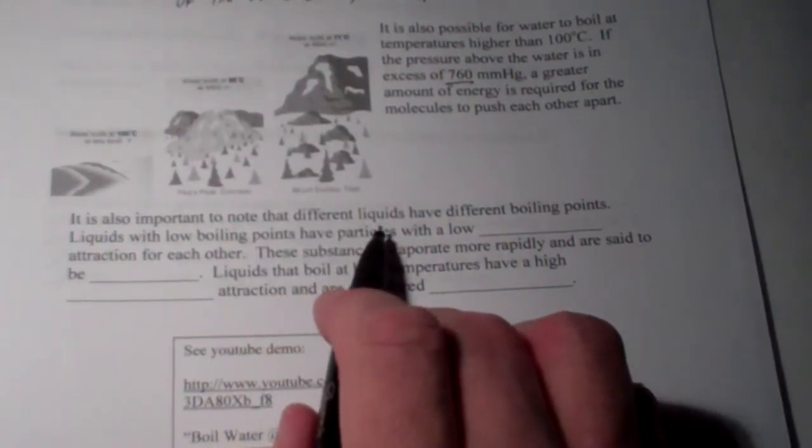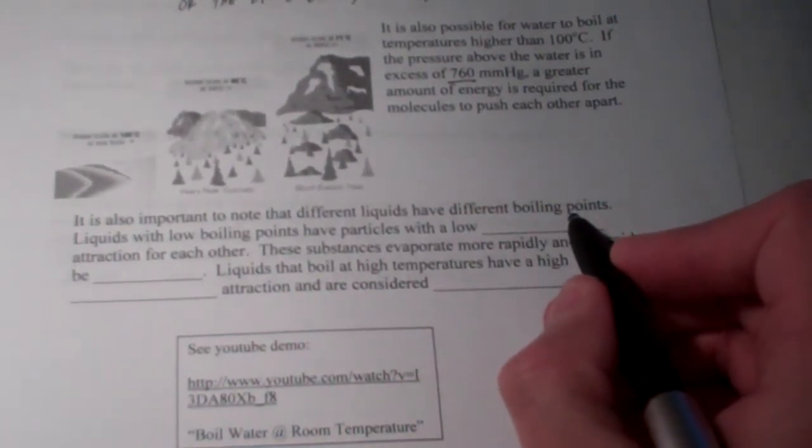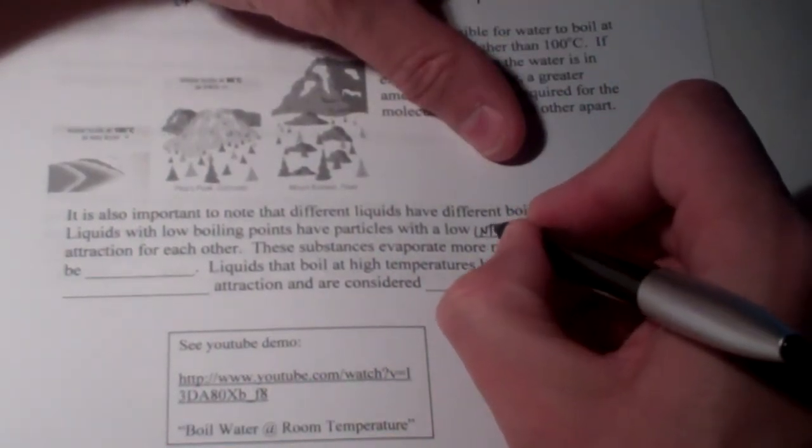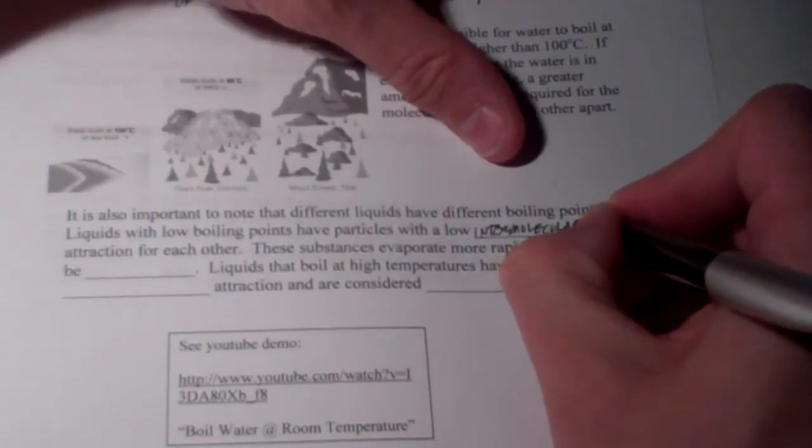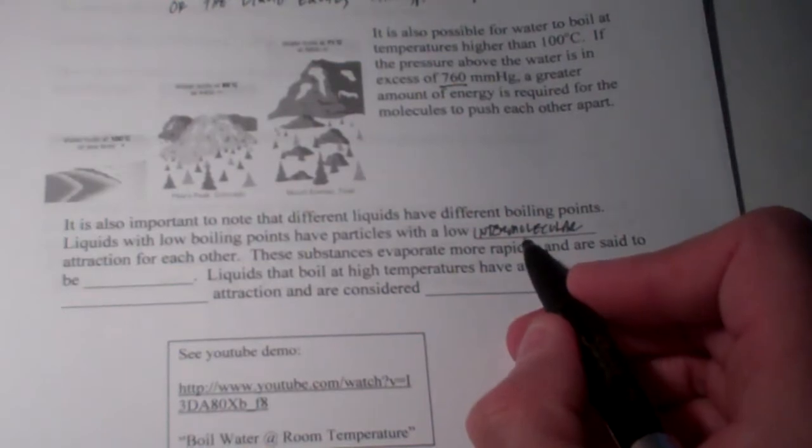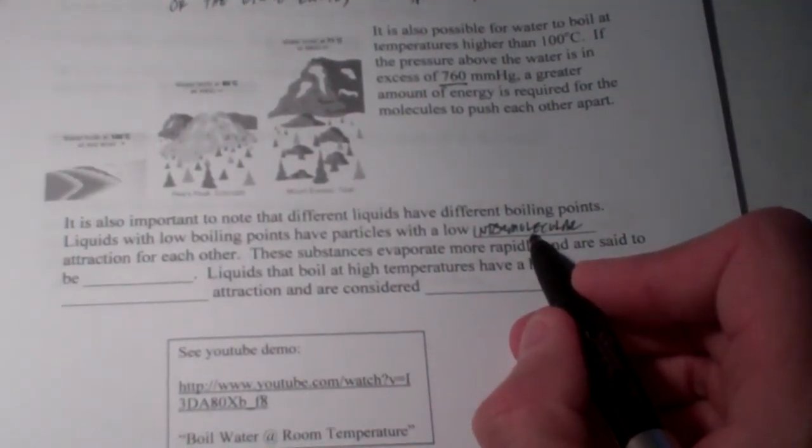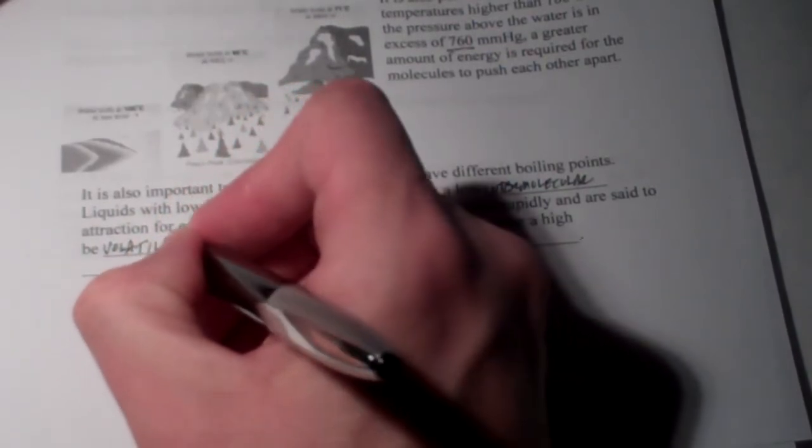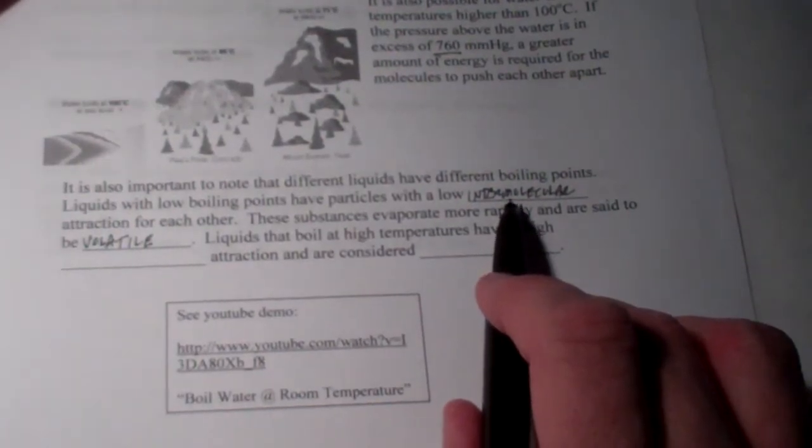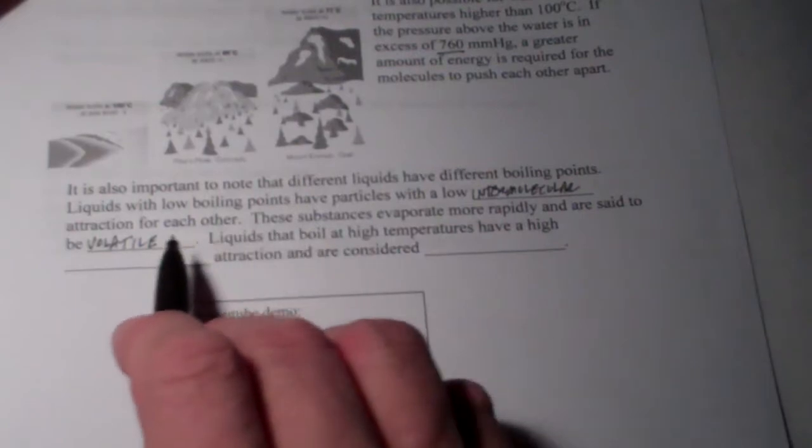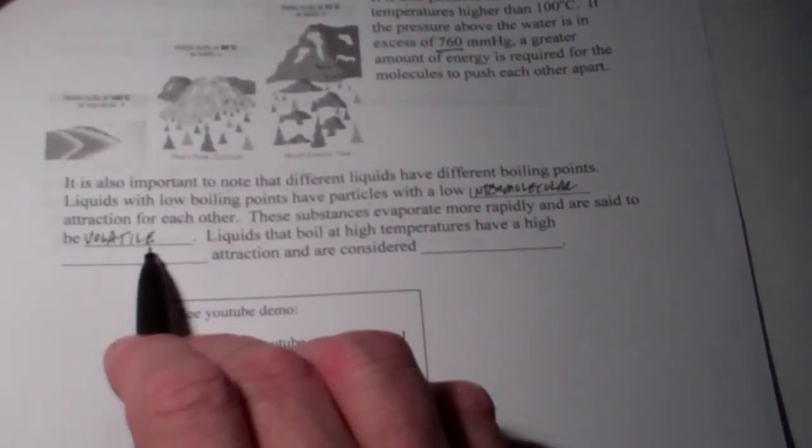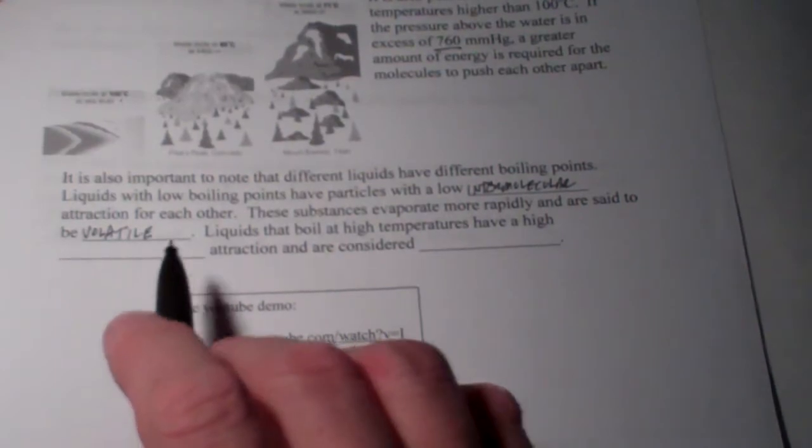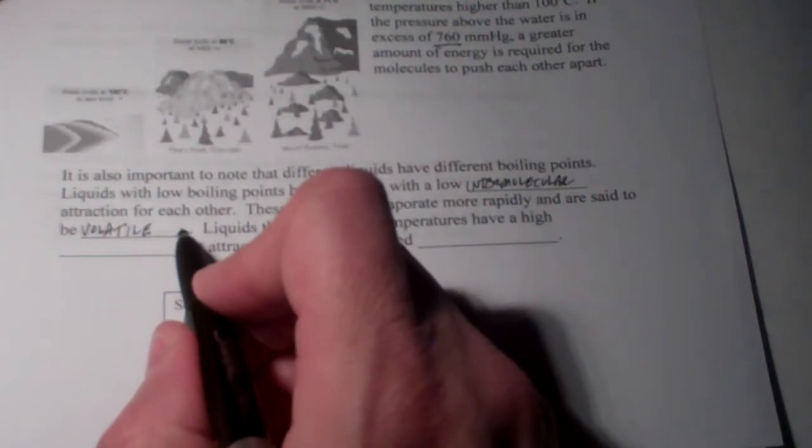It's also important to note that different liquids have different boiling points. Of course they do. Not everything boils at 100 degrees Celsius, like water. Liquids with low boiling points have particles with low intermolecular attraction for each other. This was a topic that we discussed in an earlier chapter when we were drawing Lewis structures and determining polarity. These substances evaporate more rapidly and are said to be volatile. If substances have weak intermolecular attractions, it's easy for those molecules to pull away from each other. They evaporate very easily and we call them volatile. Think, for instance, of fingernail polish remover or toenail polish remover. If you ever spill that on your skin, it feels cold. The reason it does is because they evaporate very quickly. Remember, evaporation is a cooling process.